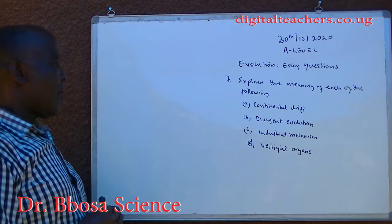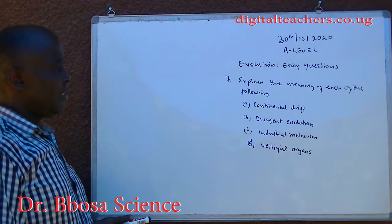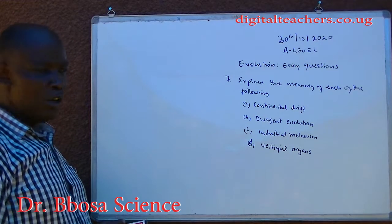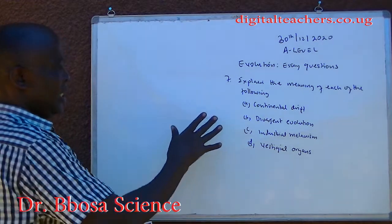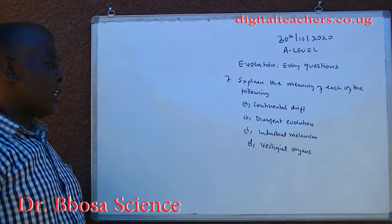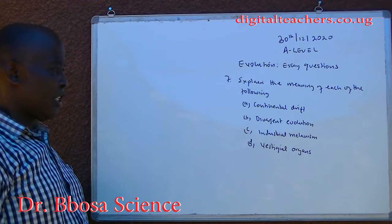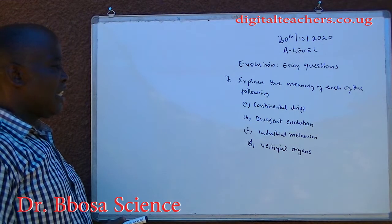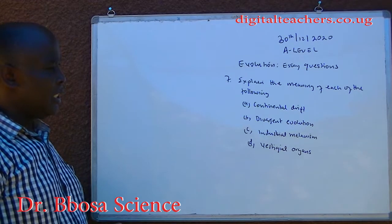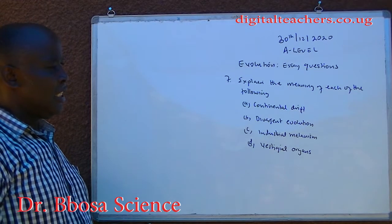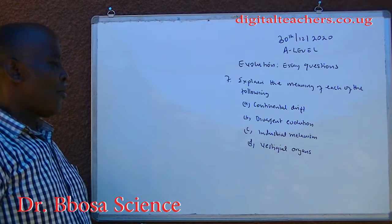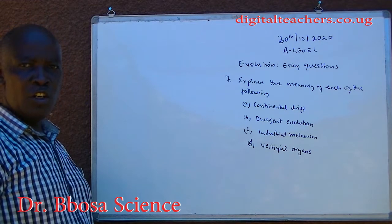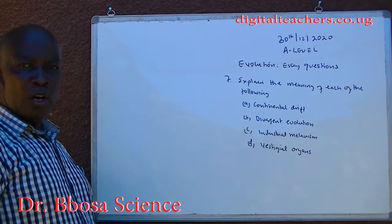Number 7. Explain the meaning of each of the following: A. Continental drift. B. Divergent evolution. C. Industrial melanism. D. Vestigial organism. You can pause and answer.